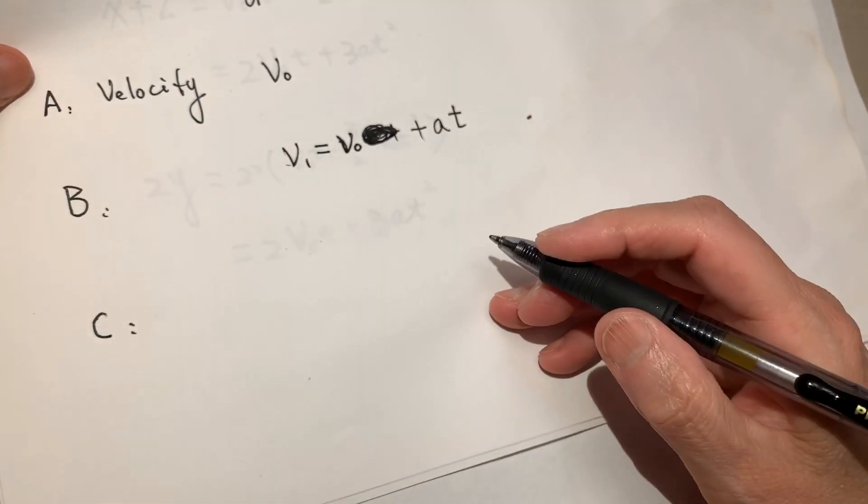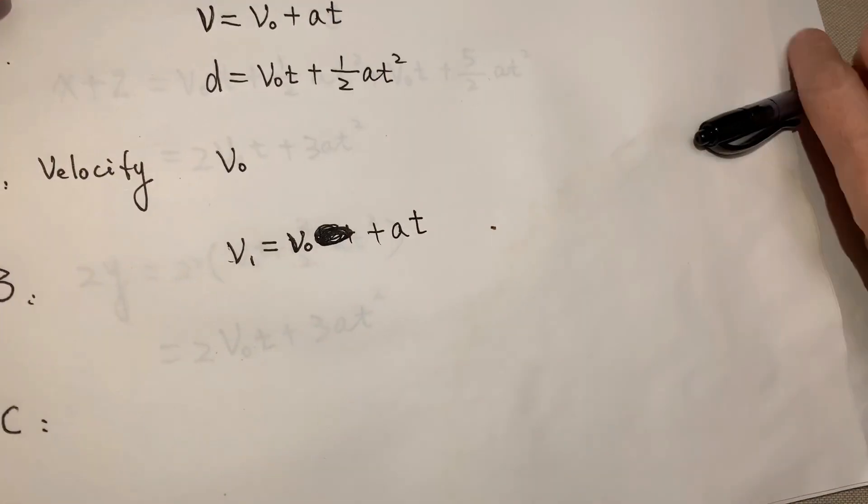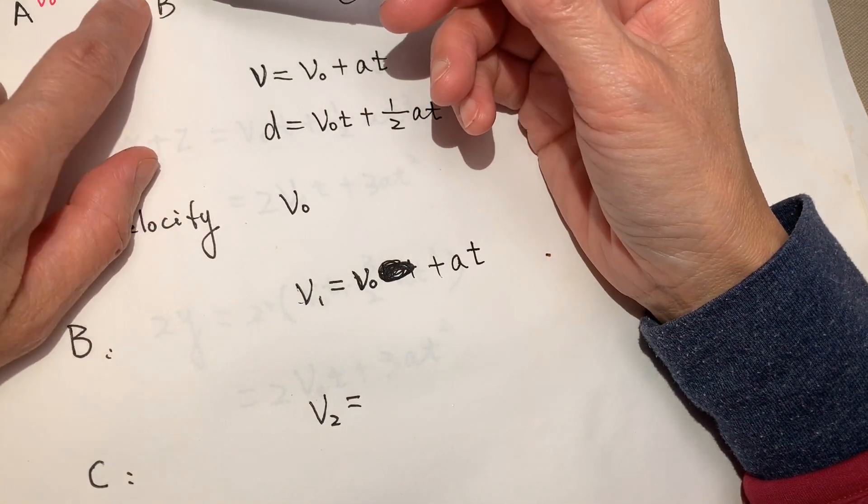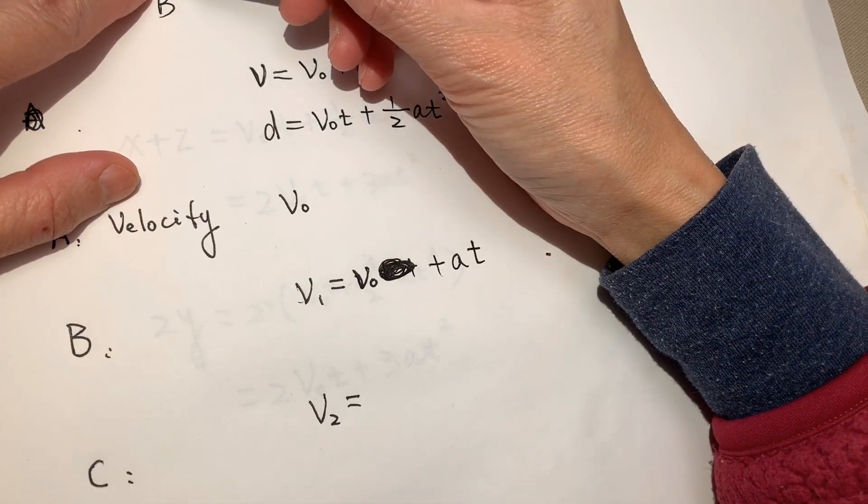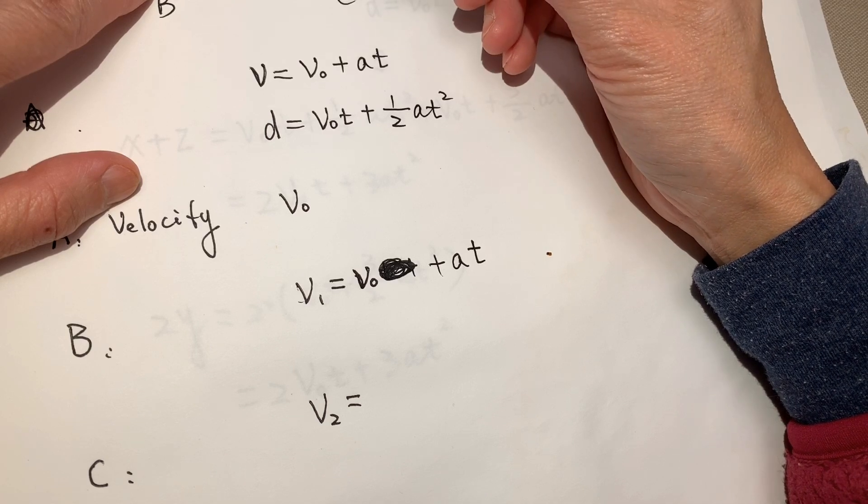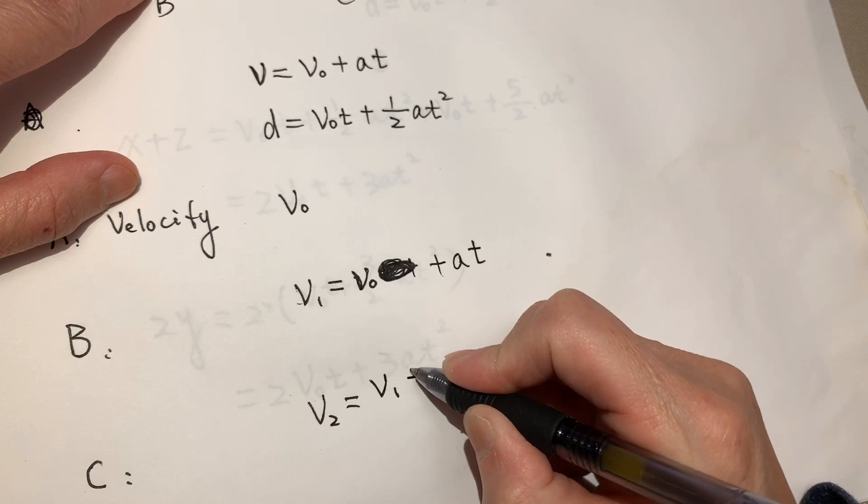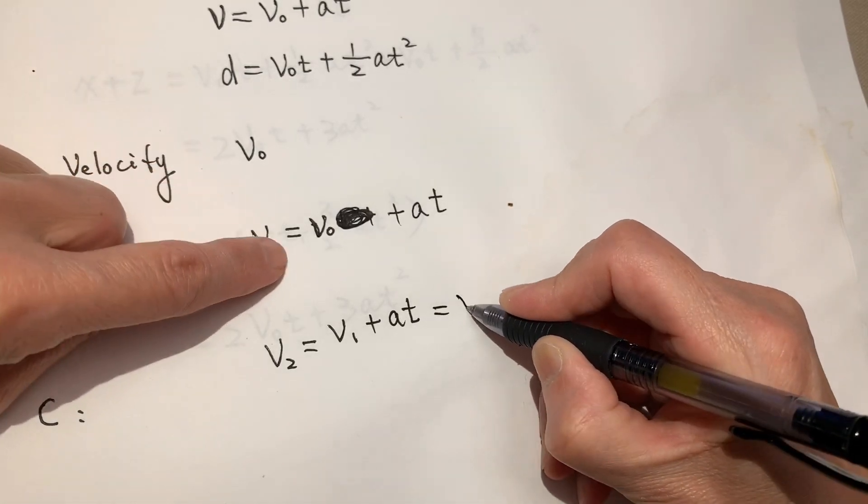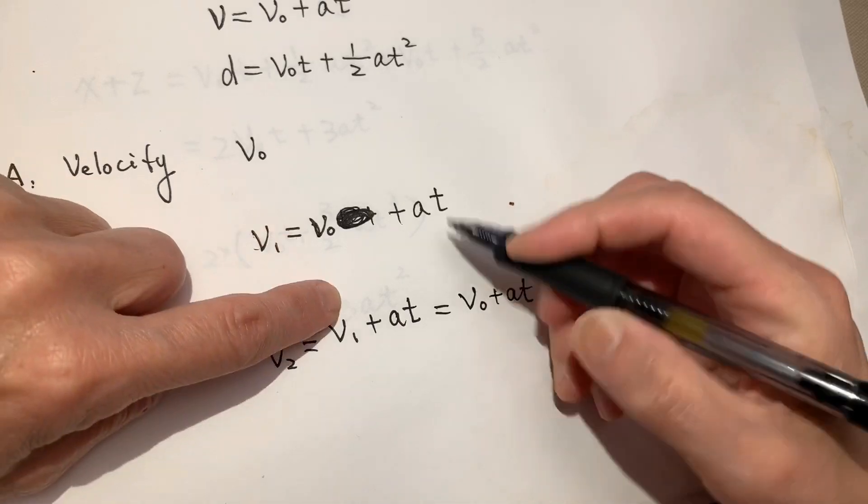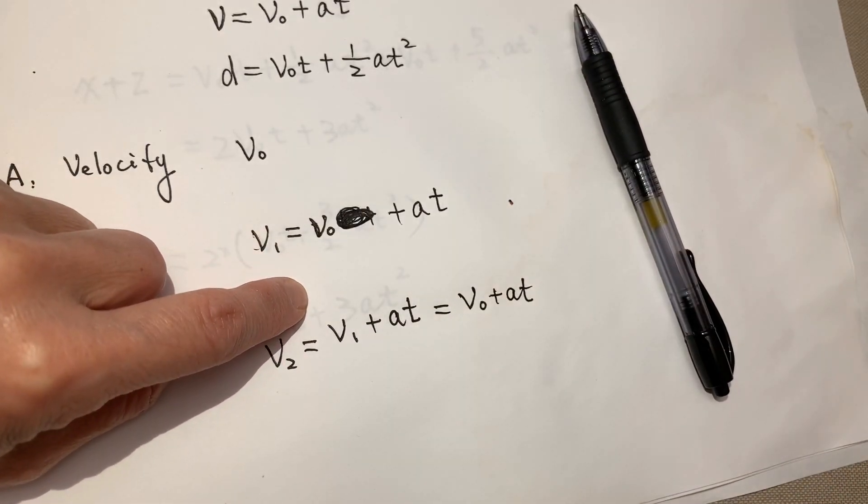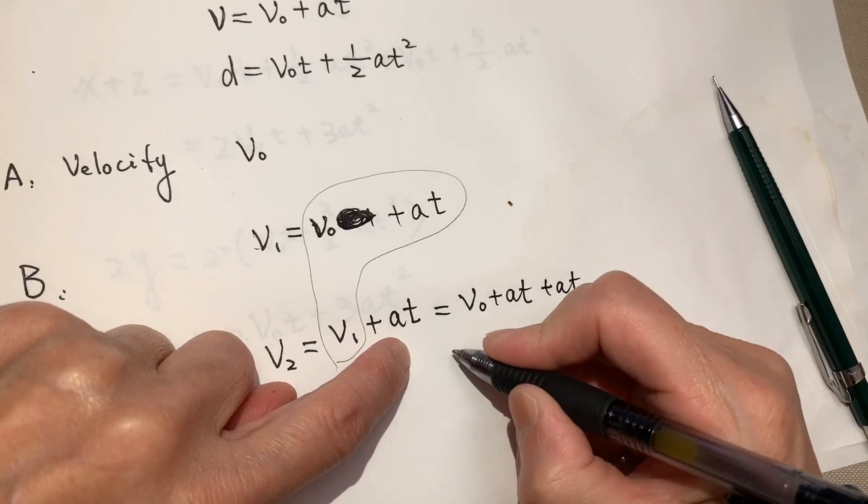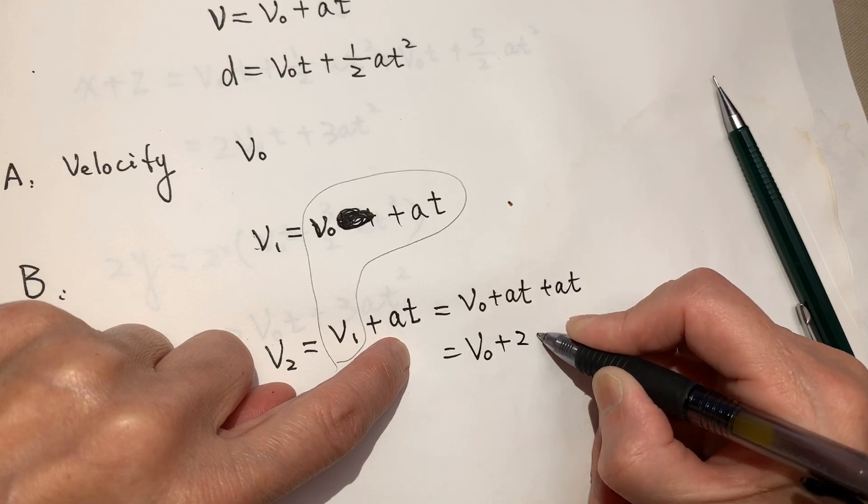Okay, at C point, the initial speed, at C point, we call it V2. V2, comparing with V2, we are talking about these two points. So the initial speed is V1 plus acceleration times the time it used. And V1 equal to V0 plus AT. Right? And then we will add the AT again. So V0 plus 2AT.